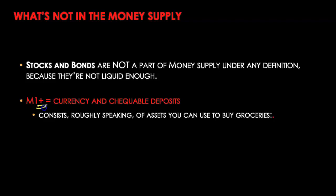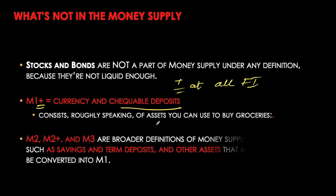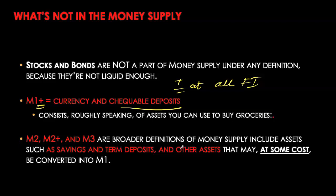The monetary aggregates start with M1+, which includes all currency outside of banks and checkable deposits. The plus sign indicates that deposits are at all financial institutions — chartered banks, trust and mortgage loan companies, and credit unions or caisse populaire in Quebec. Without the plus sign, it would refer only to chartered banks. In the United States, the narrowest monetary aggregate is M1, whereas in Canada we start with M1+. Broader monetary aggregates like M2, M2+, and M3 include more near monies such as savings and term deposits, mutual funds, or foreign currency accounts.